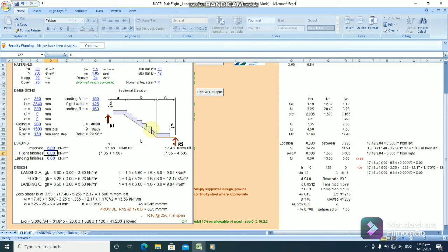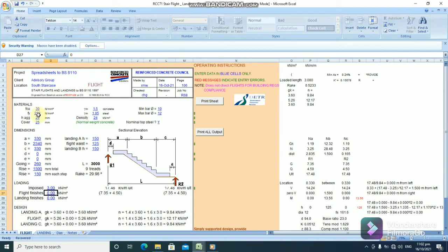So, designing a staircase is as easy as that. And, if you are not going to use mild steel, you can just easily change this steel fy to 460, 410, or thereabout.